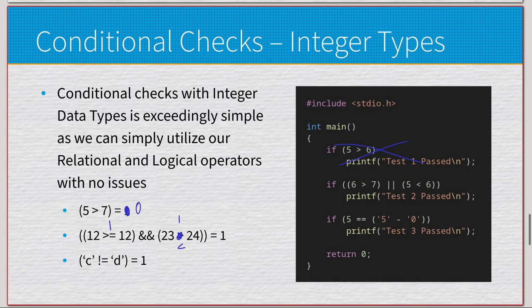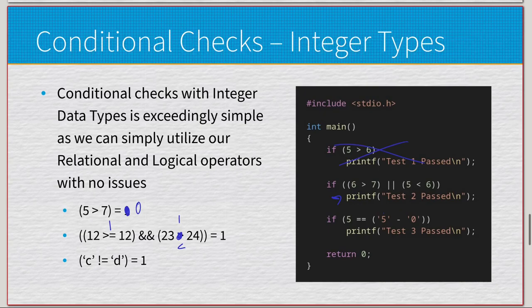For test two: (6 > 7) || (5 < 6) — 6 > 7 is false, 5 < 6 is true; false OR true = true, so 'test 2 is passed'. For test three: checking if 5 == ('5' - '0'). Subtracting the character '0' converts the character '5' to the decimal integer value 5, so 5 == 5 is true — 'test 3 is passed'.